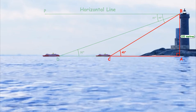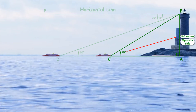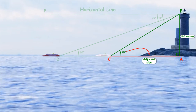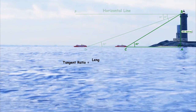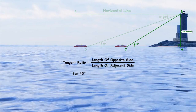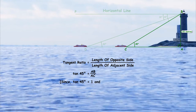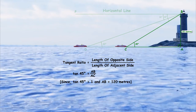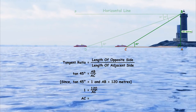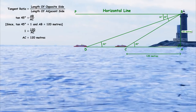Now, if we observe only triangle BAC: with respect to angle BCA, we know the opposite side AB, which is the height of the lighthouse, and we need to find the adjacent side AC, which is the distance of the first ship from the lighthouse. The trigonometric ratio involving the opposite side and adjacent side is the tangent ratio. Thus, tan 45 = AB / AC. Since tan 45 is 1 and AB is 120 meters, the equation becomes 1 = 120 / AC. Thus, AC = 120 meters. Hence, the first ship is 120 meters away from the base of the lighthouse.